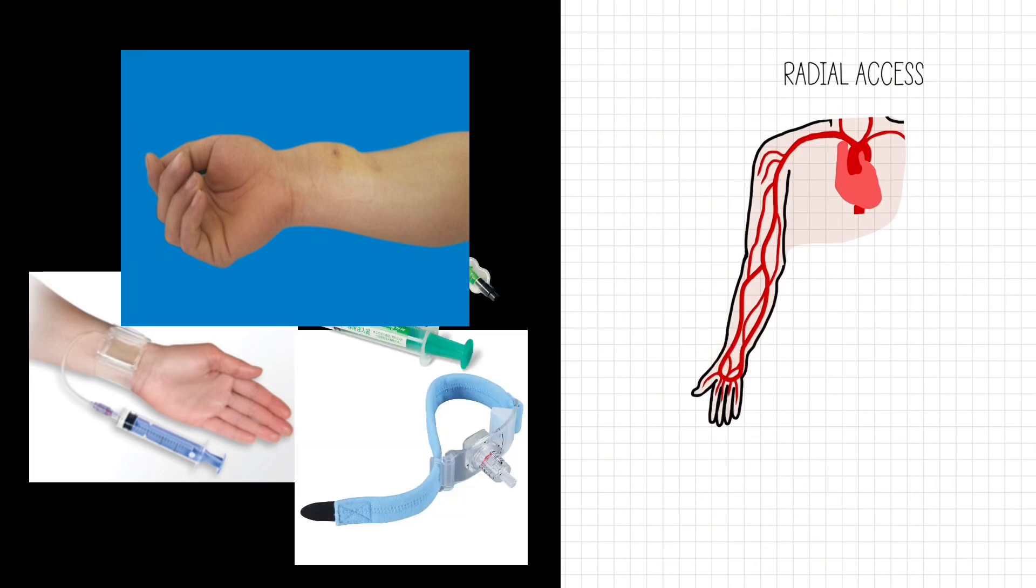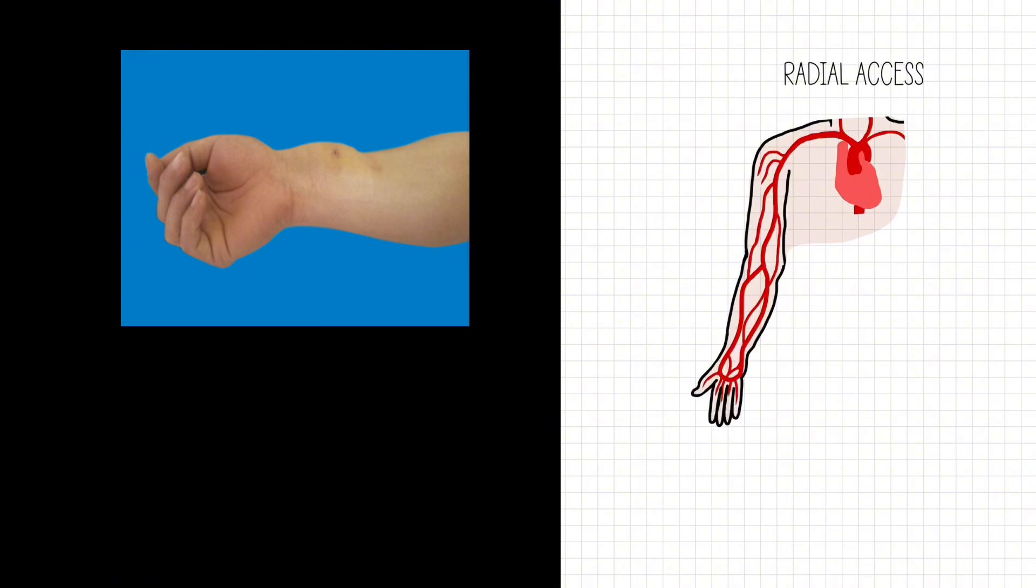You can have access-related complications in the arm directly related to the band that they have on. We use those little bracelets for radial. You can have bleeding in this area and sometimes swelling from a hematoma. You could have ischemia to the hand distally.